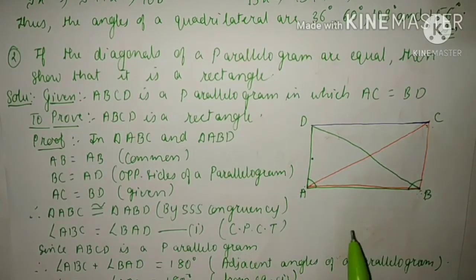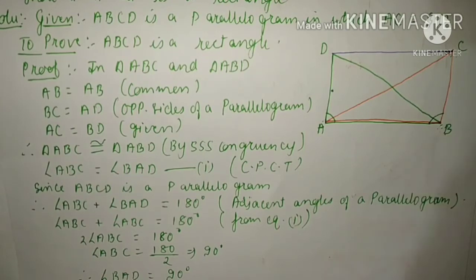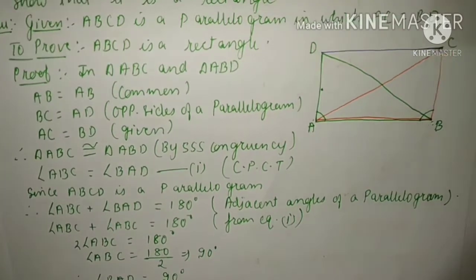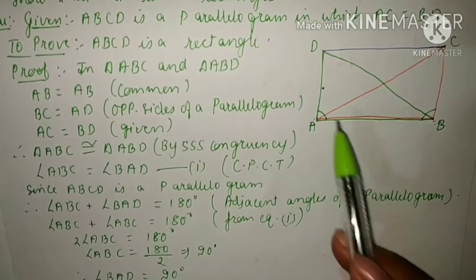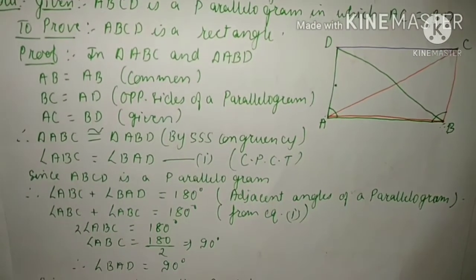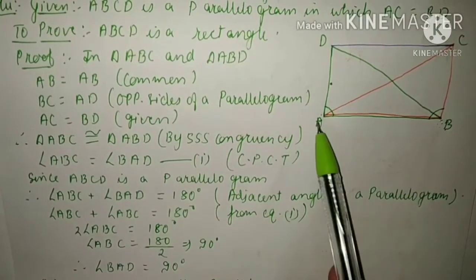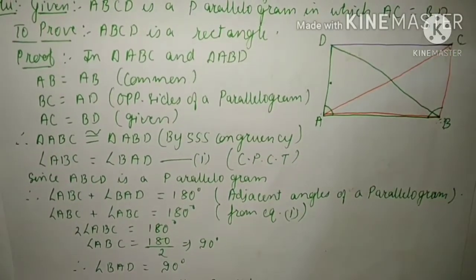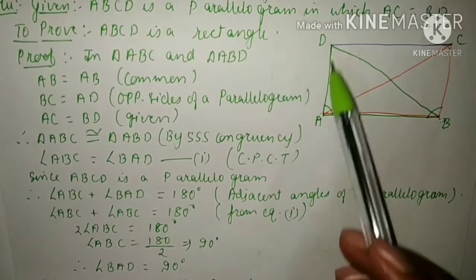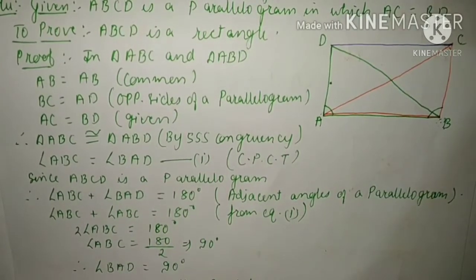Now since ABCD is a parallelogram, the sum of adjacent angles of a parallelogram is equal to 180 degrees. So we can write: angle ABC plus angle BAD is equal to 180 degrees. The reason is adjacent angles of a parallelogram sum to 180 degrees.